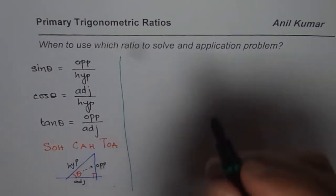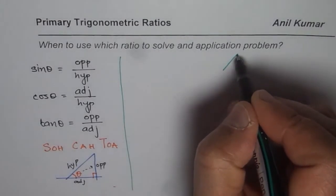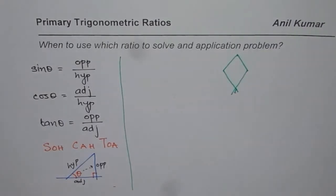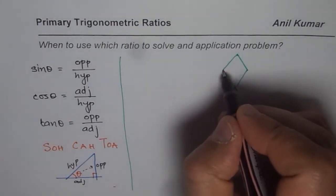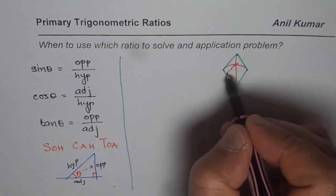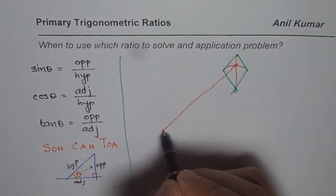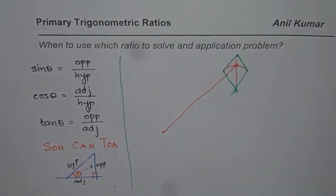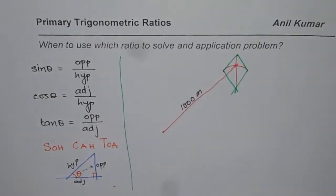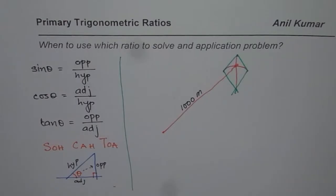Now let's take an example to show how to use sine or cosine. Imagine we are flying a kite, and we have released about 1000 meters of thread into the flight. That thread length is 1000 meters. We want to know the height at which this kite is flying.